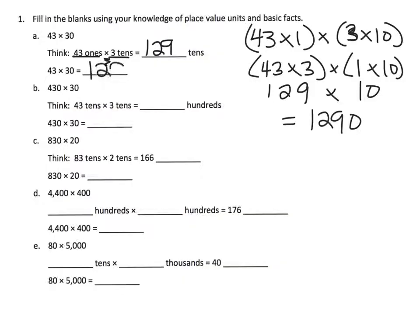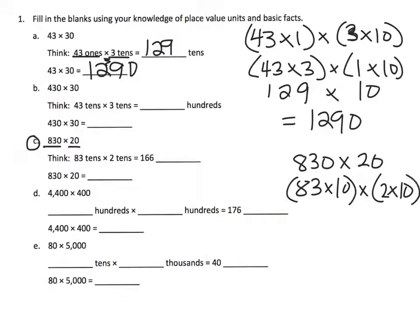Let's skip down to problem C. We've got 830 times 20. Well that's the same thing as saying 83 copies of 10, 83 tens, times two copies of tens or two tens.